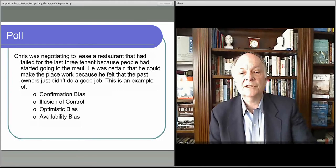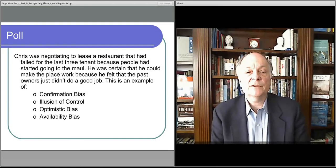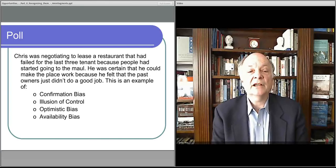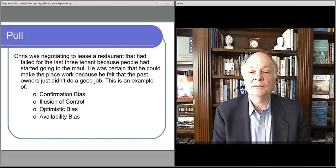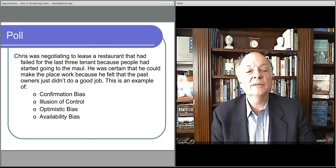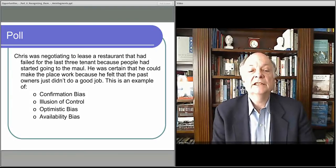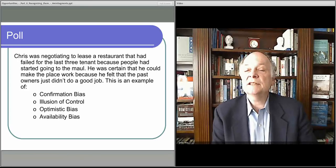Okay, let's go on to the next one. Chris was negotiating a lease for a restaurant that had failed the last three tenants because people had started going to the mall. He was certain that he could make the place work because he felt that the past owners just didn't do a good job. This is an example of what?